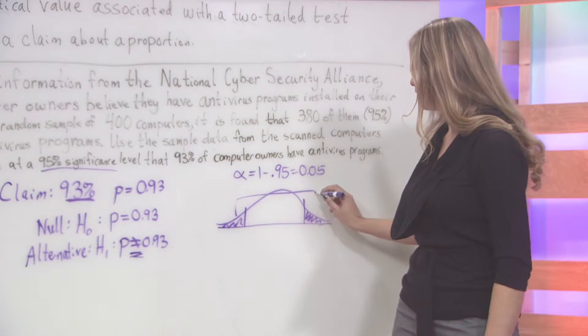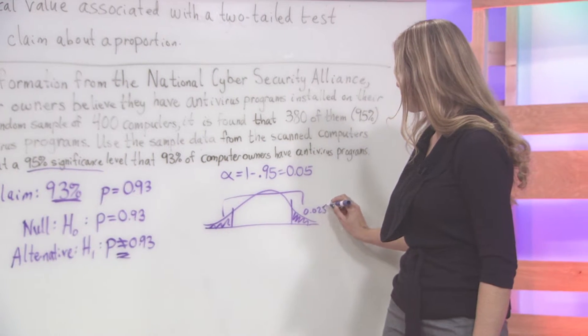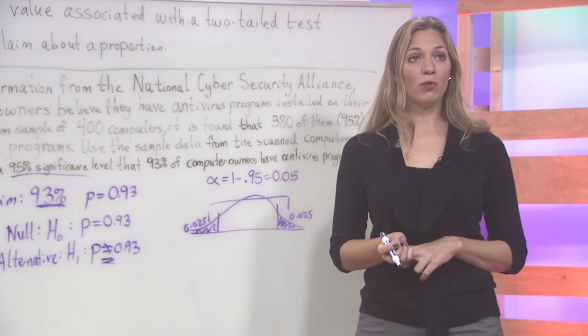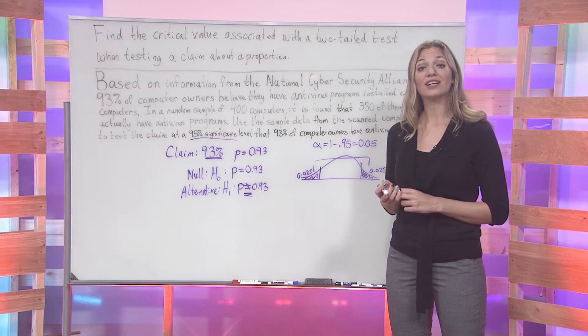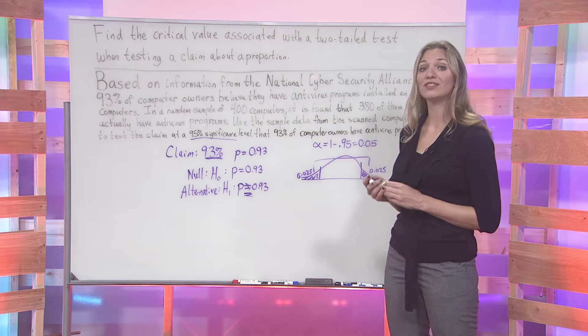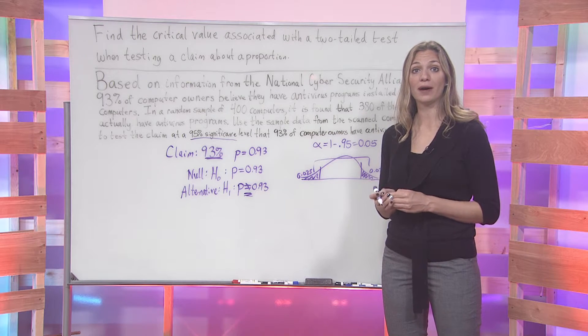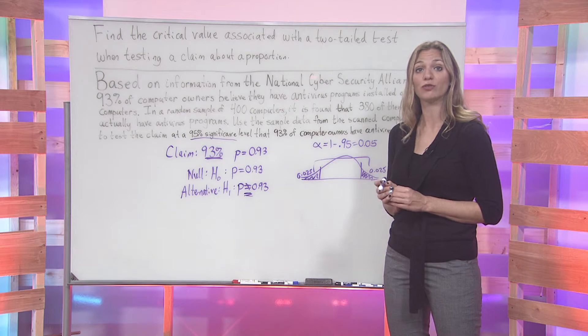Each side will have an individual area of 0.025. Where the 0.025 comes from is taking our alpha value and dividing it by two. 0.05 divided by two is 0.025.